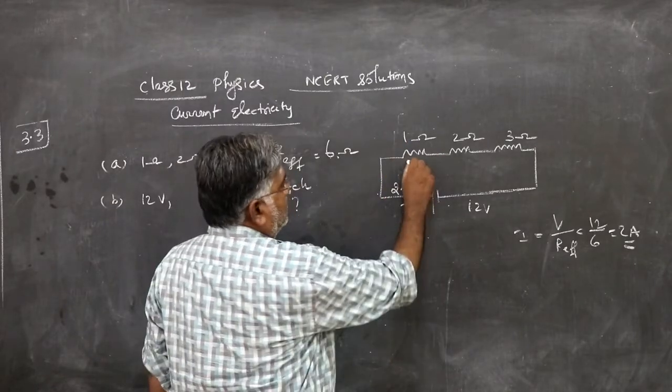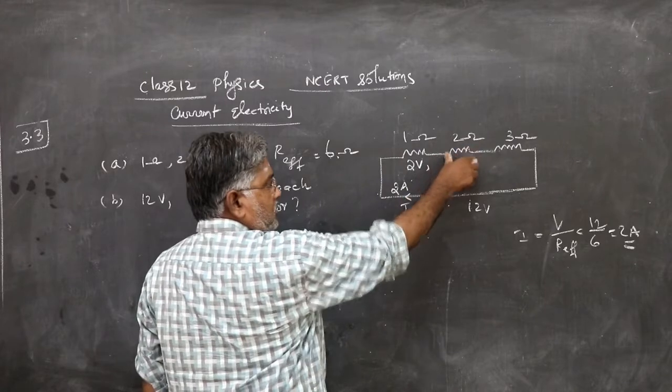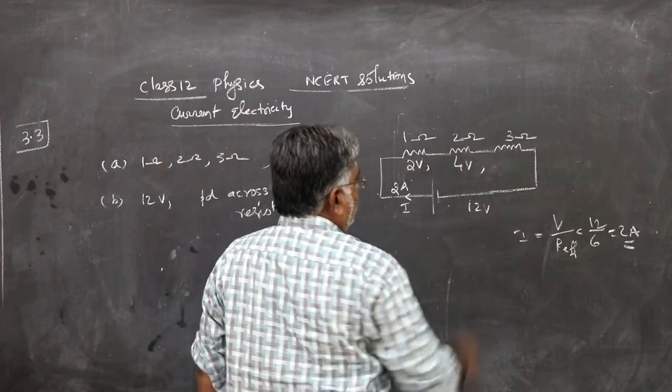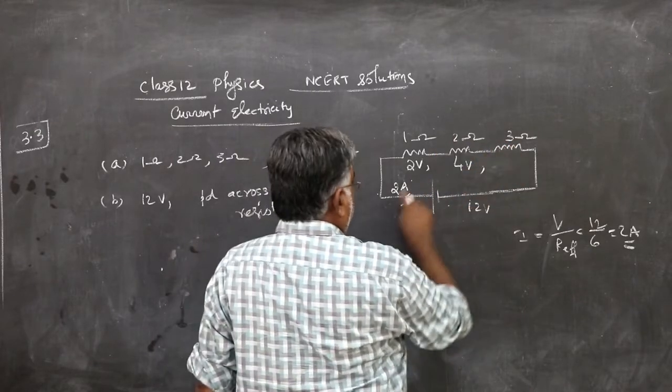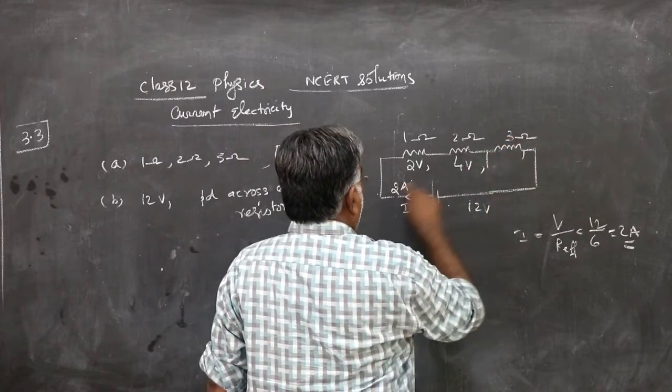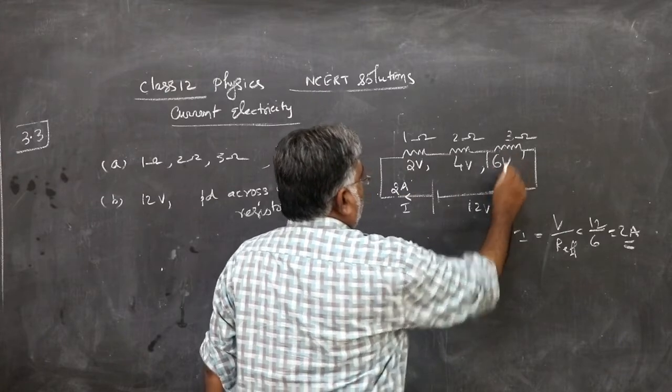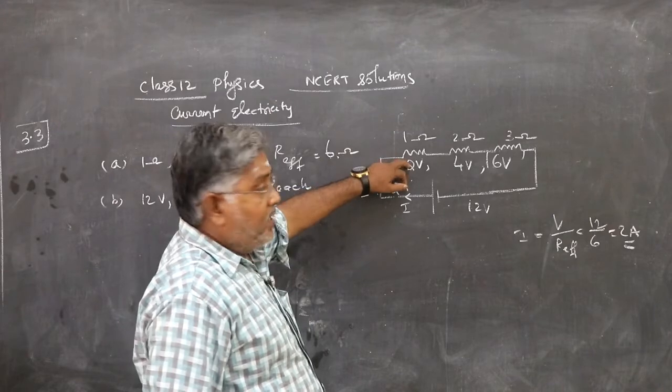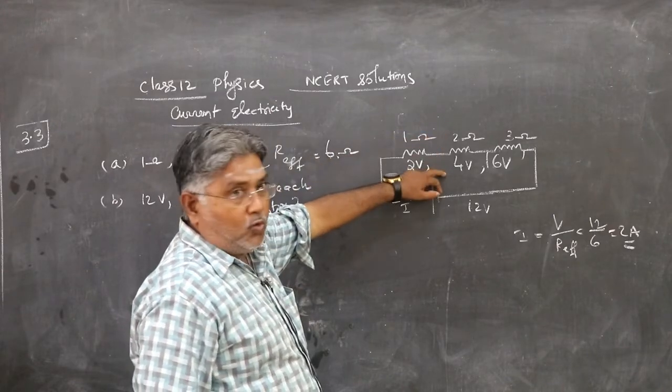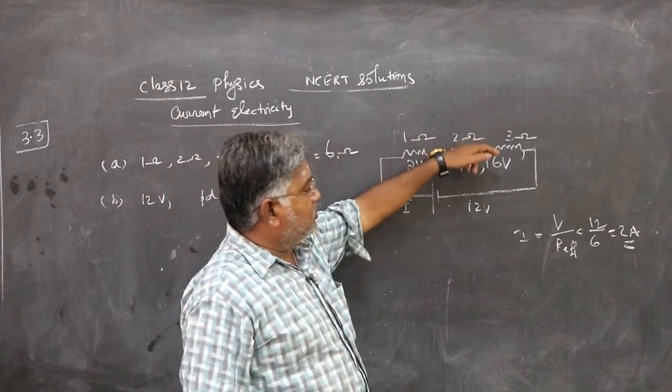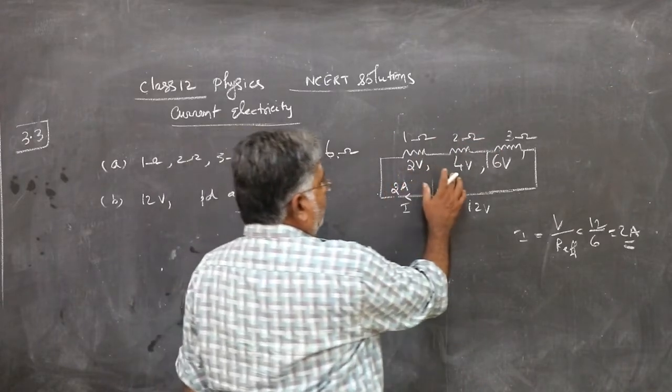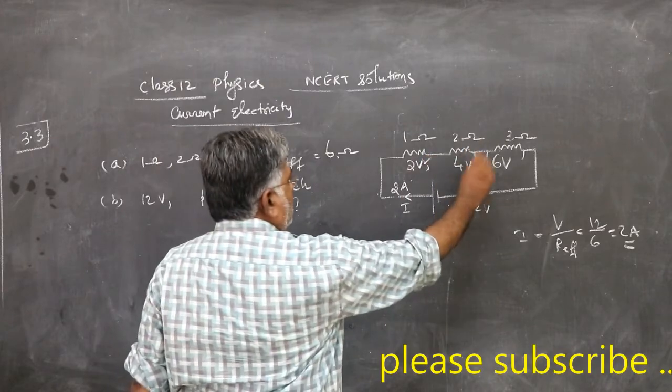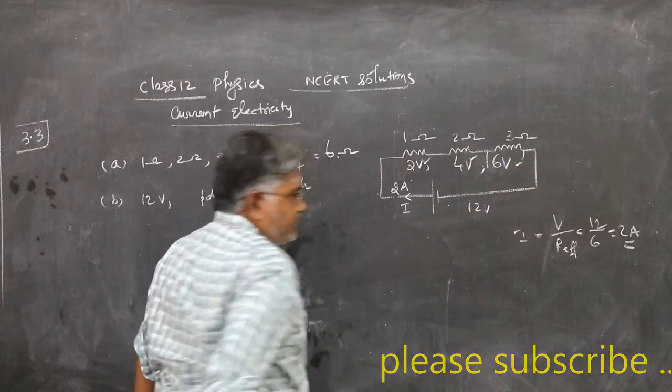So, PD across this current into this resistance is 2 volt. 4 volt, 2 into 2. PD across this current into the resistance, 2 into 3, 6 volt. So, the potential drop across 1 ohm resistance is 2 volt, across 2 ohm resistance is 4 volt, across 3 ohm resistance is 6 volt. You can cross-check. You add 2 volt, 4 volt, 6 volt, you should get 12 volt. So, the answers are 2 volt, 4 volt and 6 volt.